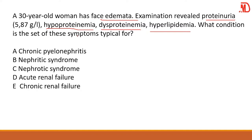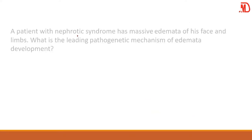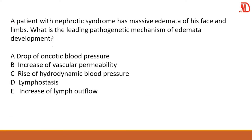In nephritic syndrome, we have hypertension, oliguria, and hematuria — that is also a triad for nephritic syndrome. Over here, we are talking about nephrotic syndrome. A patient with nephrotic syndrome — already told it's a kidney problem — is having edema of the face and limbs.